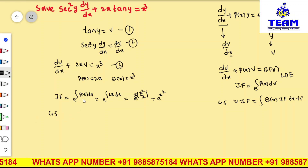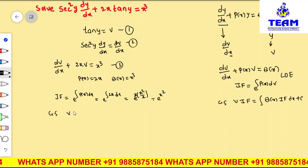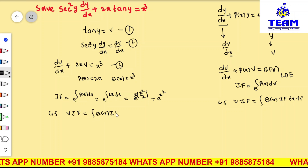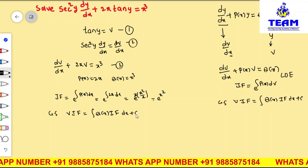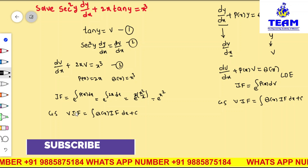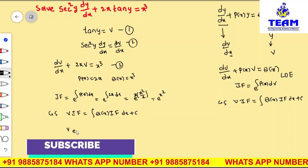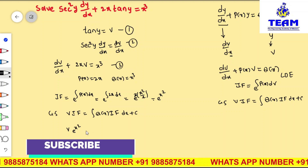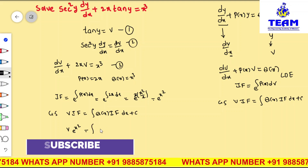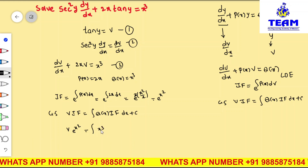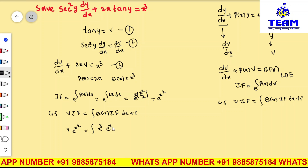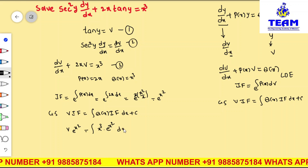The general solution is v · (integrating factor) = ∫Q(x) · (integrating factor) dx + C. So v, which is tan(y), times e^(x²) equals ∫x³ · e^(x²) dx + C. Now we need to simplify this integral.